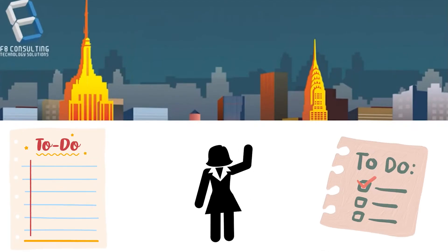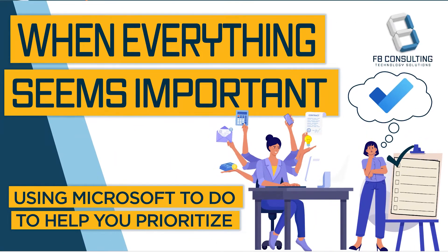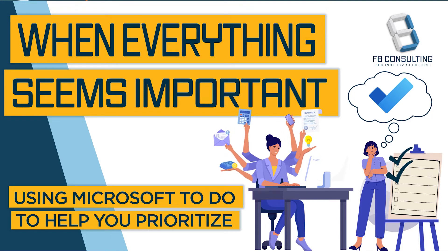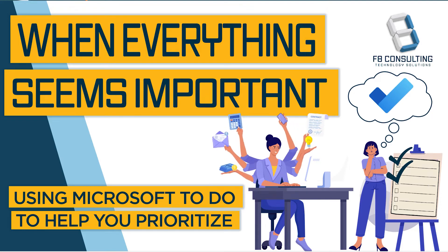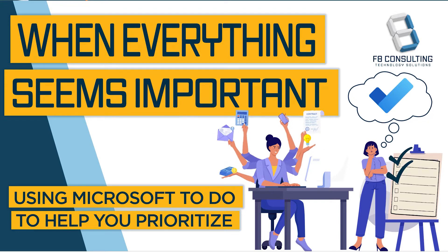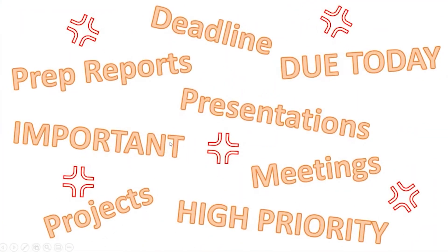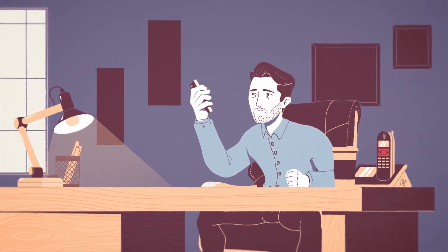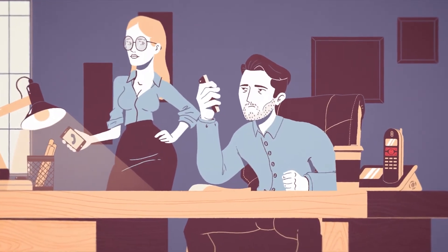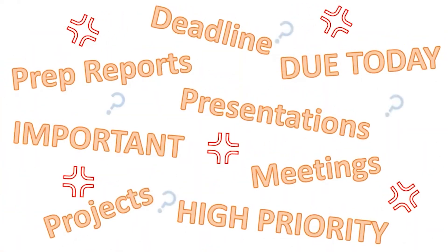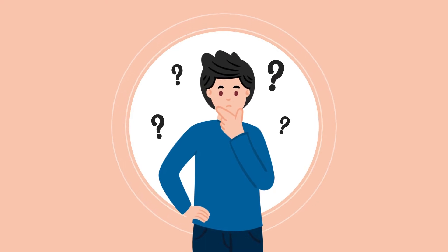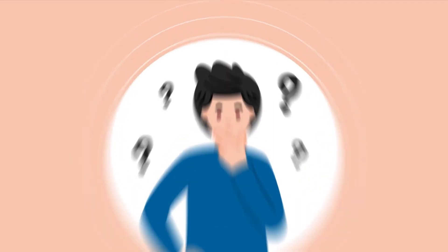Today, we are going to be going over when everything seems important, using Microsoft To Do to help you prioritize. We'll be going over how to use Microsoft To Do and some tips to help you prioritize while using it. When you sign in in the morning or get to work, you have deadlines, due dates, everything seems important, meetings to go to, projects — and you may start thinking to yourself, where do I start? Where do I even begin with this huge list of things to do?